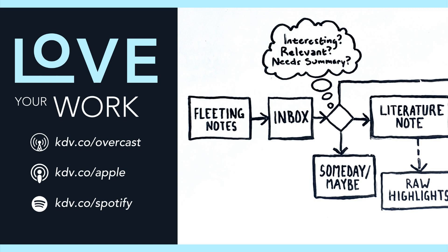I also read some academic articles and do the least reading of all on the web. For both, my process is the same: I save the PDF in a to-read folder on Dropbox — yes, I make PDFs of web articles — then read the PDF on LiquidText for iPad where I highlight it, export my highlights to plain text, and follow the same process as for books to make literature notes and permanent notes. My process for web articles is inefficient, but I rarely read them.